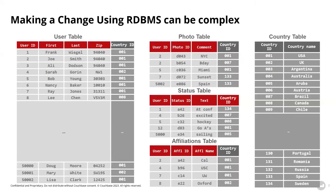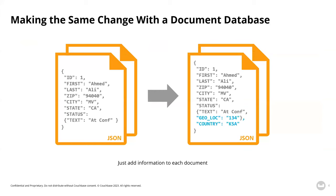JSON is flexible. What does that actually mean when we say that? One of the benefits is the ability of developers and DBAs to adapt to requirements. Adding a single column to a database — a simple column like a country ID even — can still be a complex, risky operation, often requiring downtime or at least putting it in read-only mode. Making that change in a document database does not require that alter.